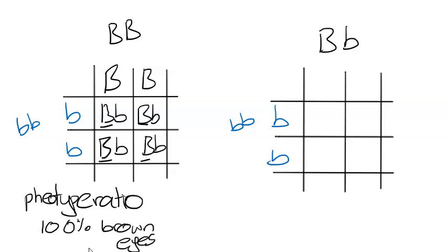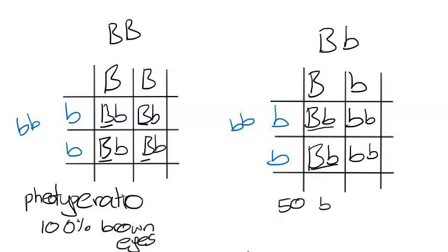Whereas for the second Punnett square, if we fill this one out, we'd have capital B, lowercase b. Two out of the four potential fertilization events, or offspring, would have capital B, lowercase b. So 50% would be brown eyes. Whereas we'd also have 50% of the offspring that could be blue eyes. So we've got 50-50, 50 brown eyes and 50% blue eyes.